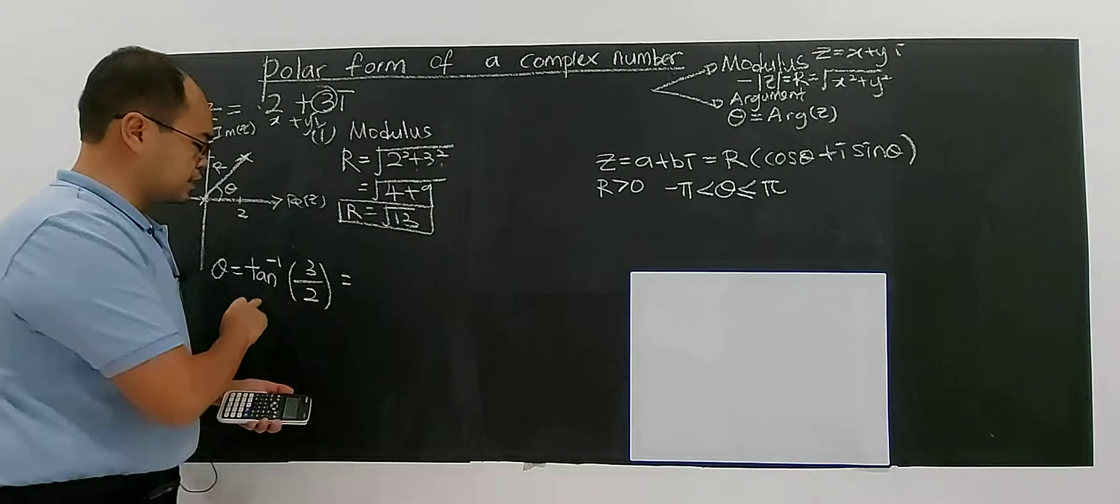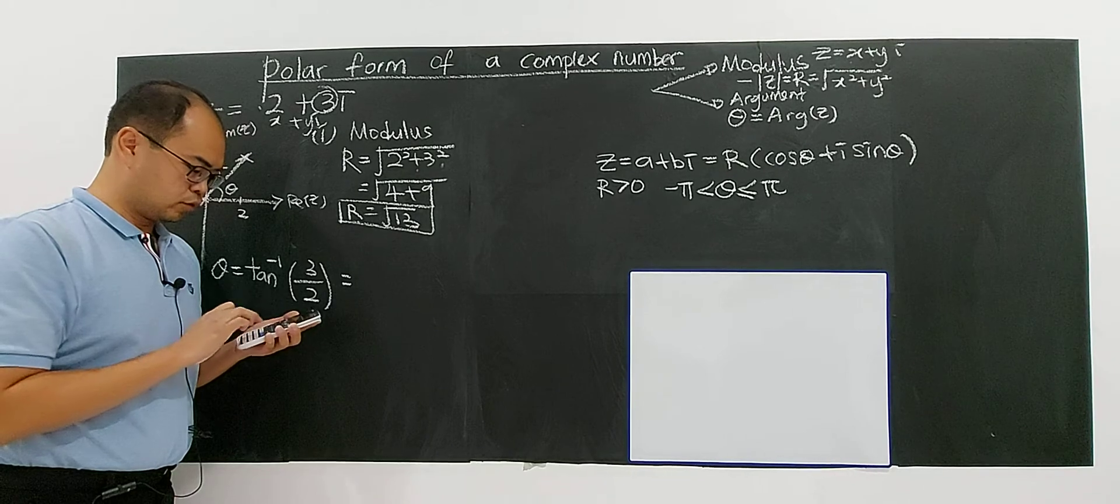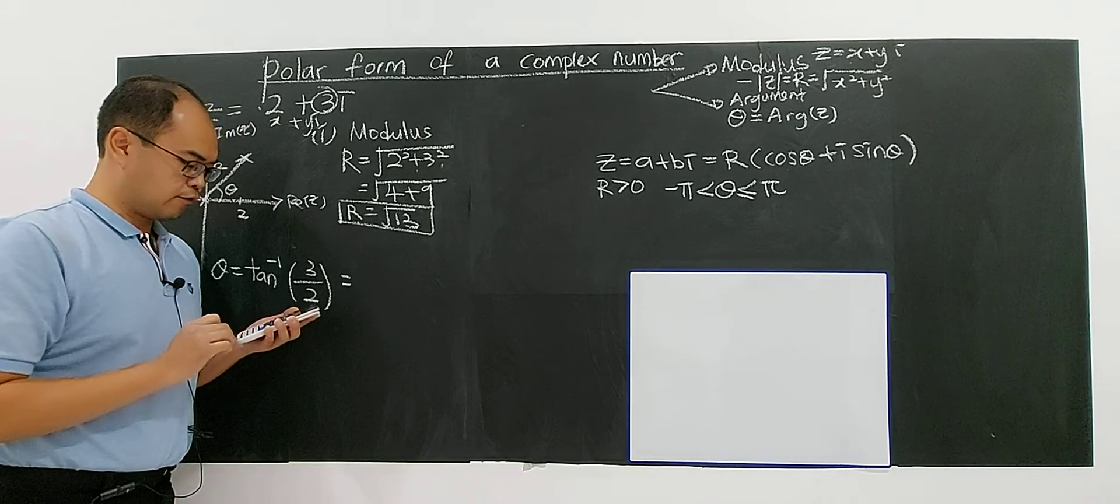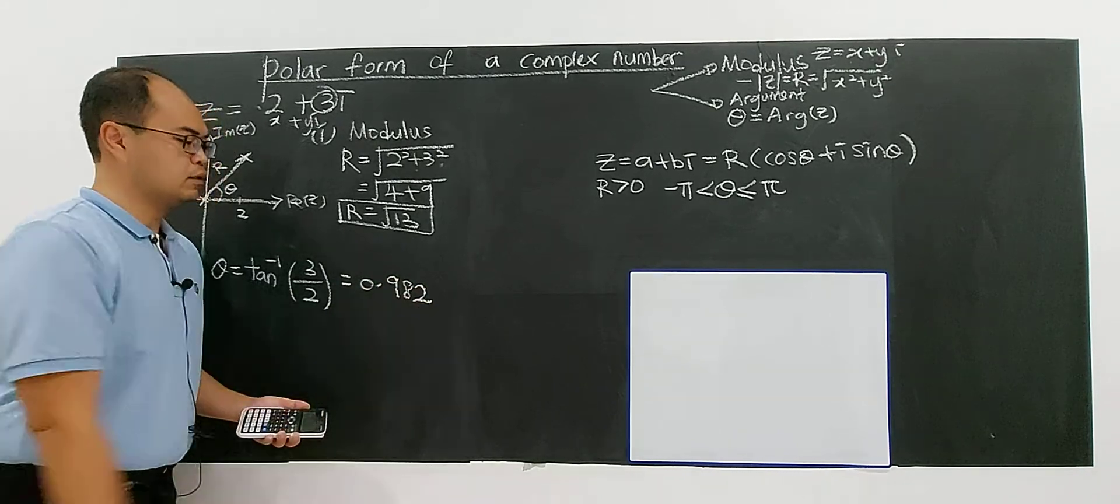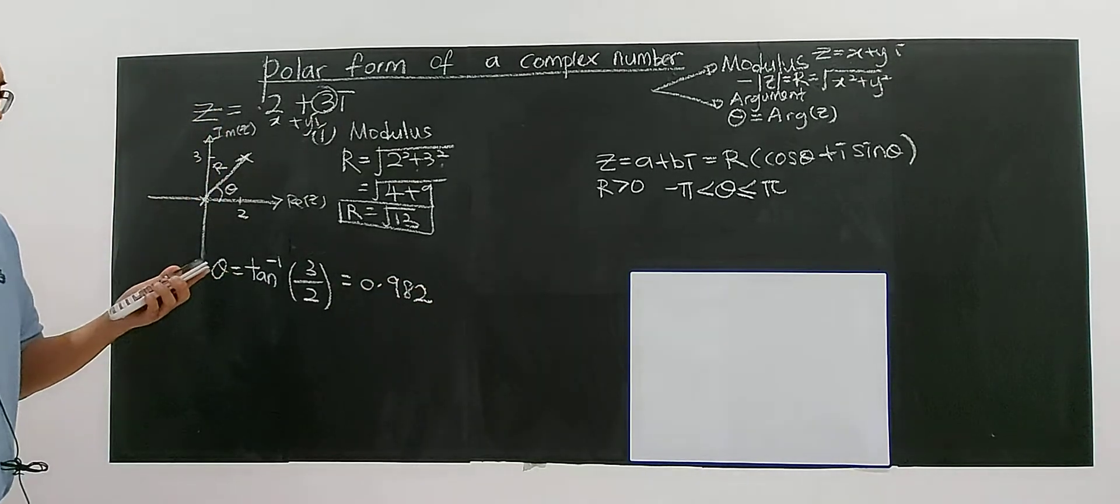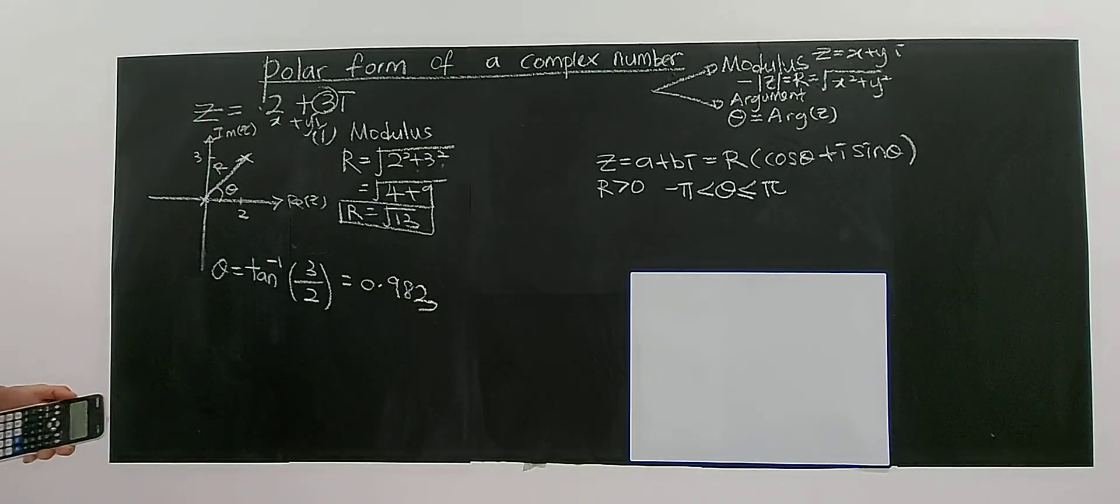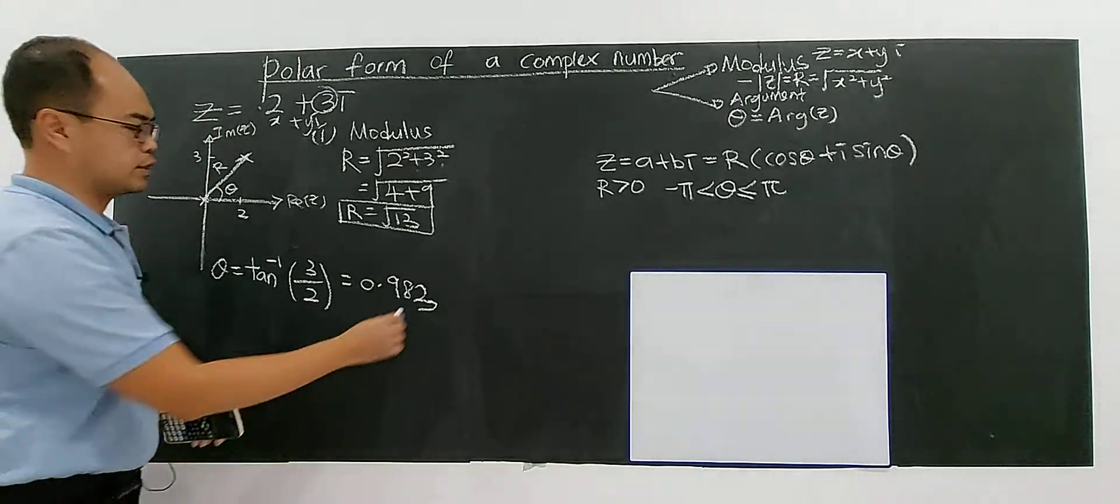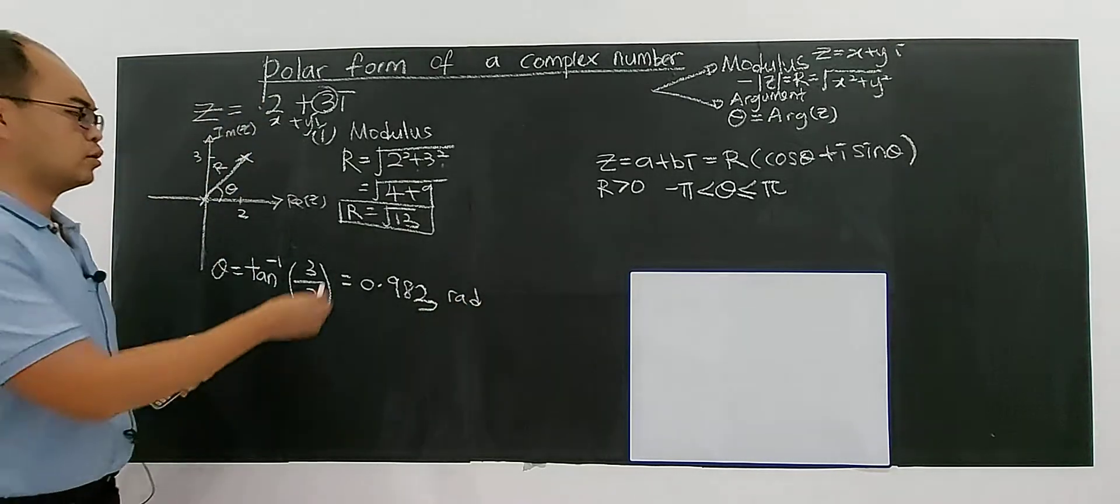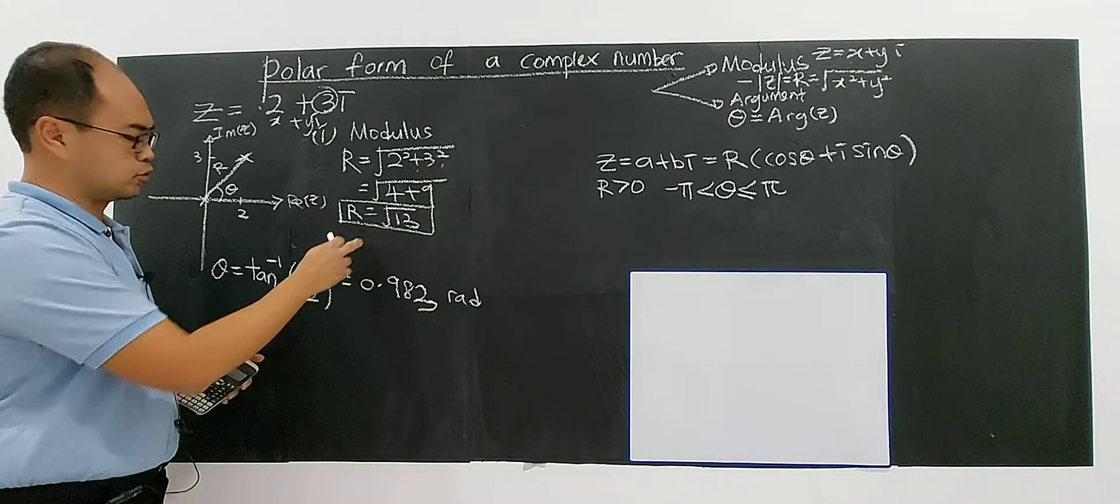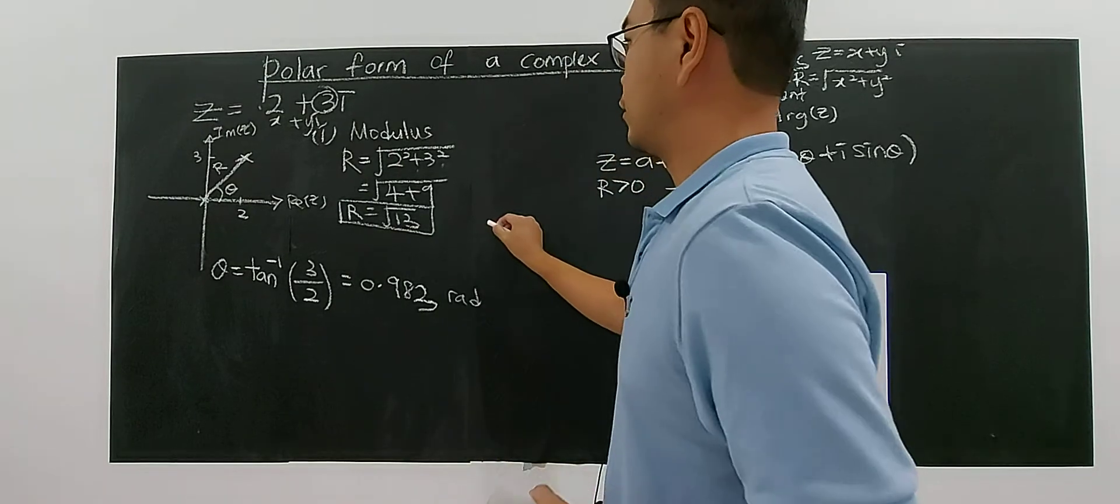By keying this into your calculator, arctan(3/2), you will get 0.983 in radians, given to three significant figures. This will be your argument. Now you have your r, your modulus, and your argument.